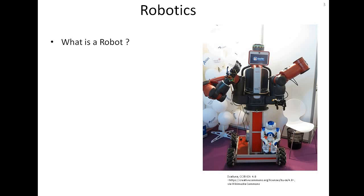The definition says that a robot is a machine that can sense its environment, make some decisions, and perform some actions or tasks automatically. Why do we need a robot?